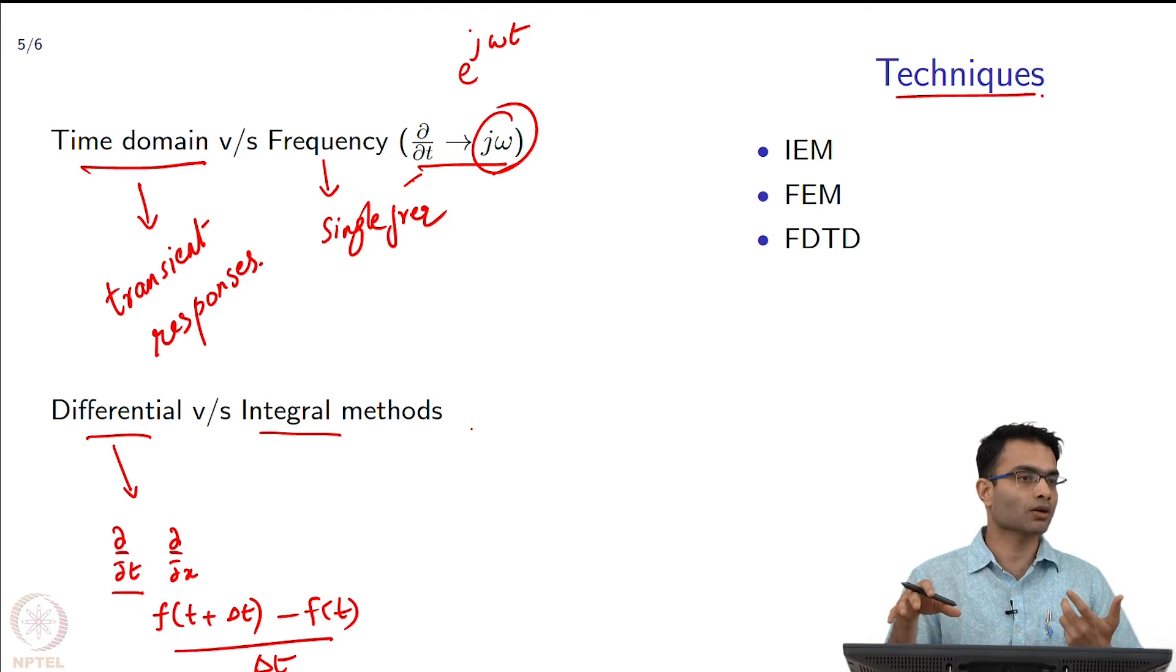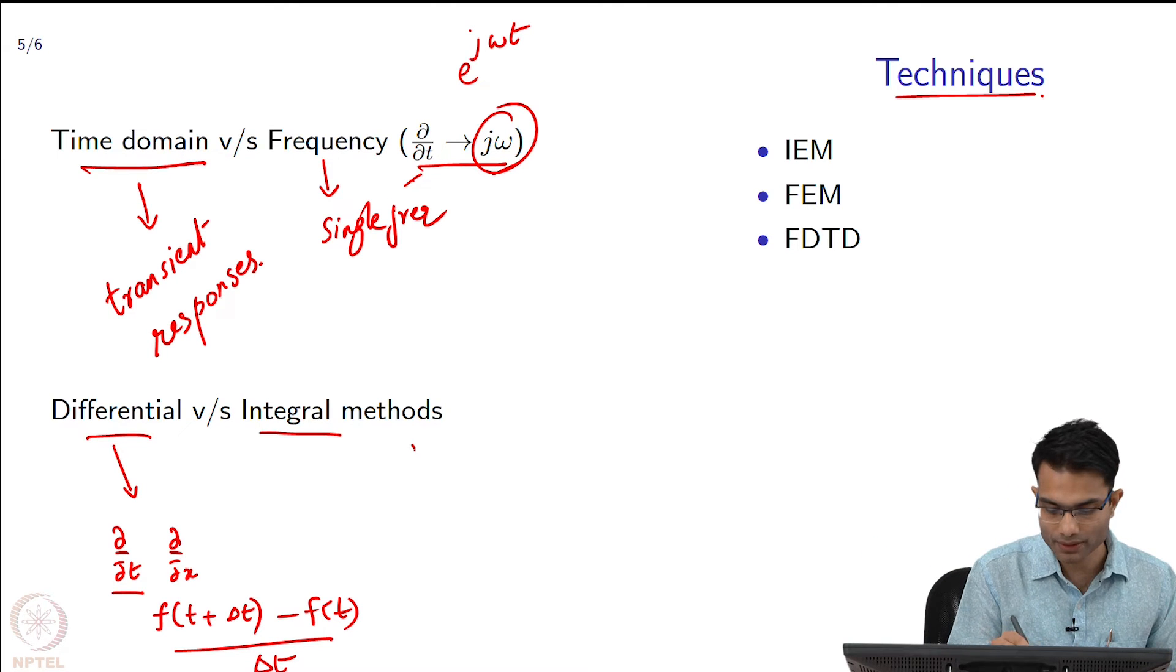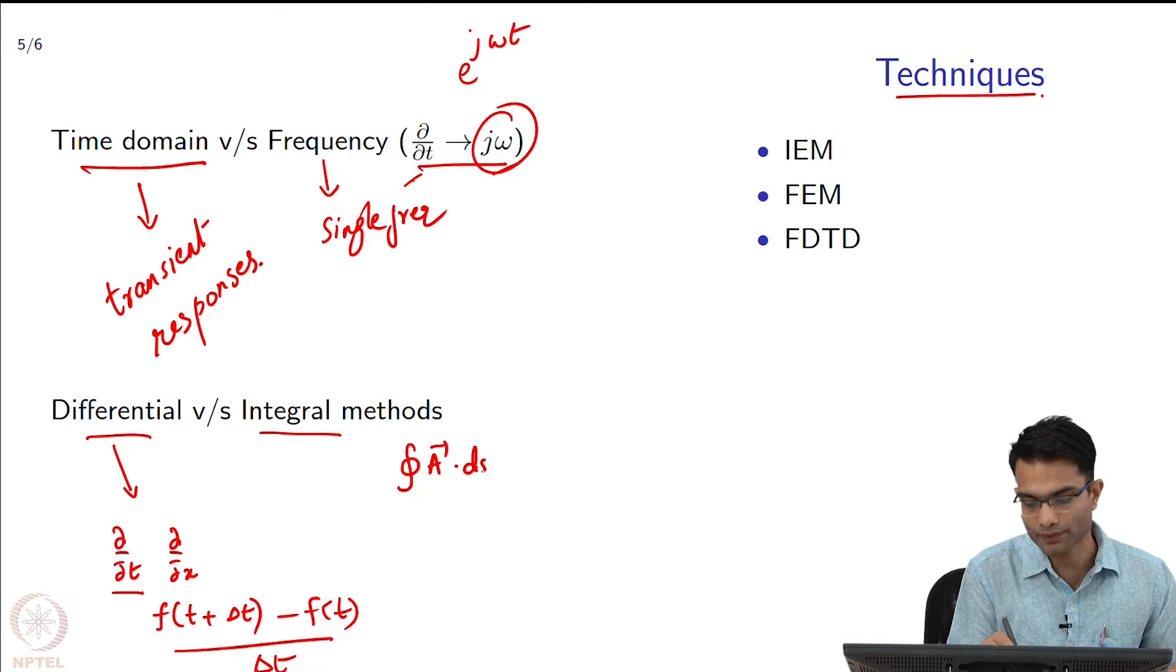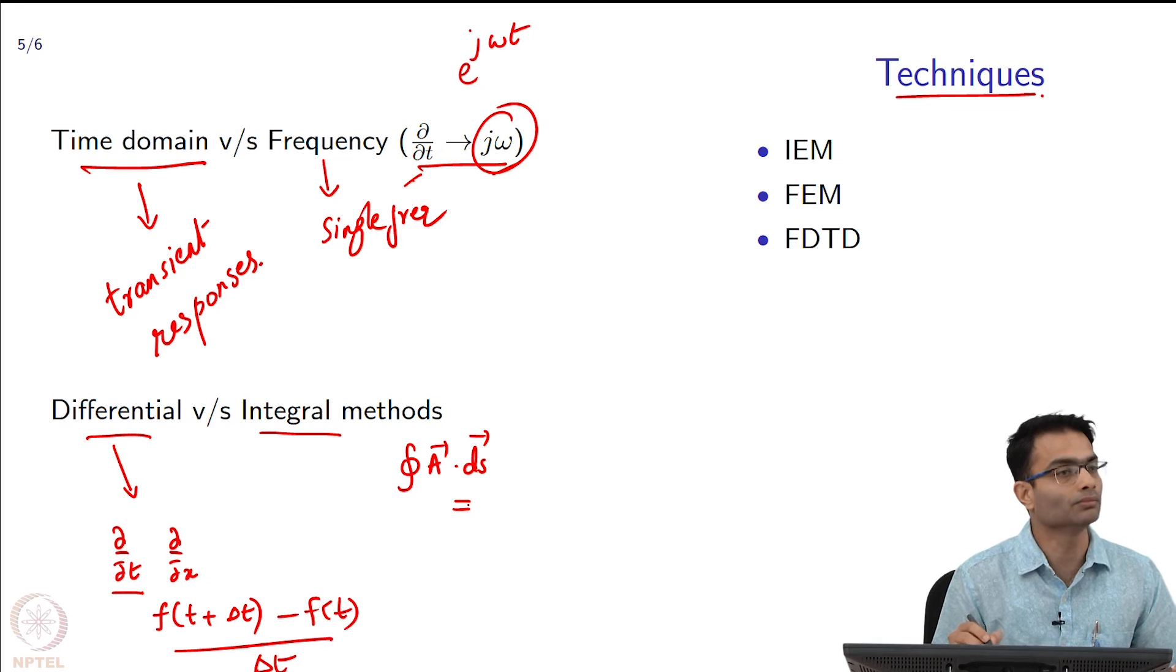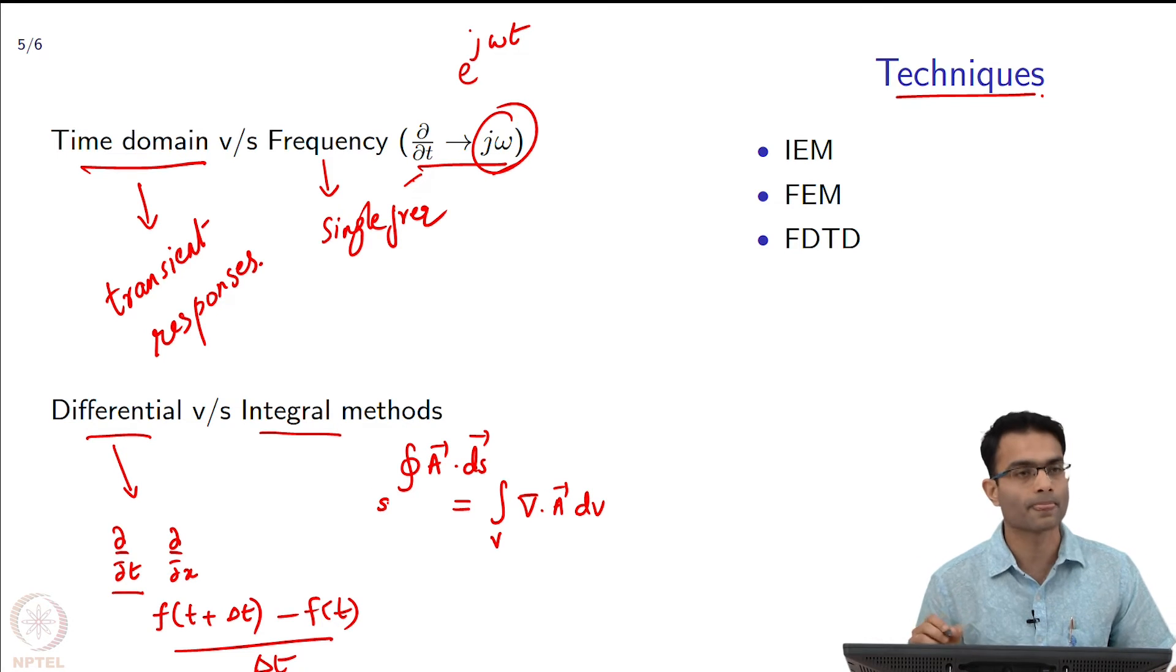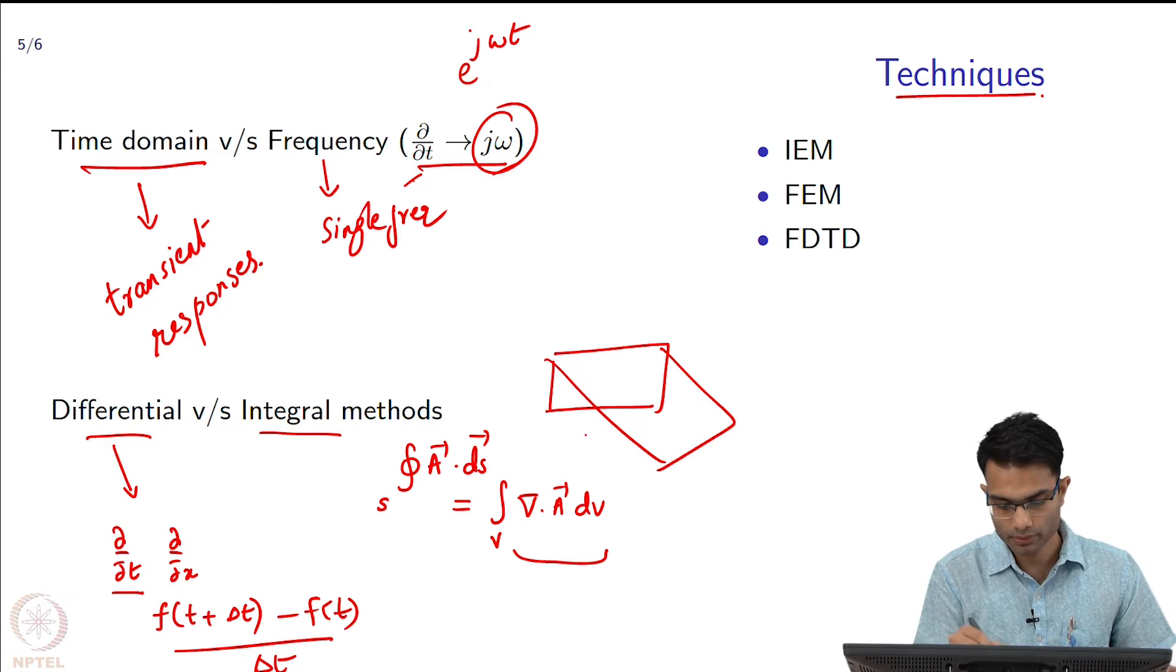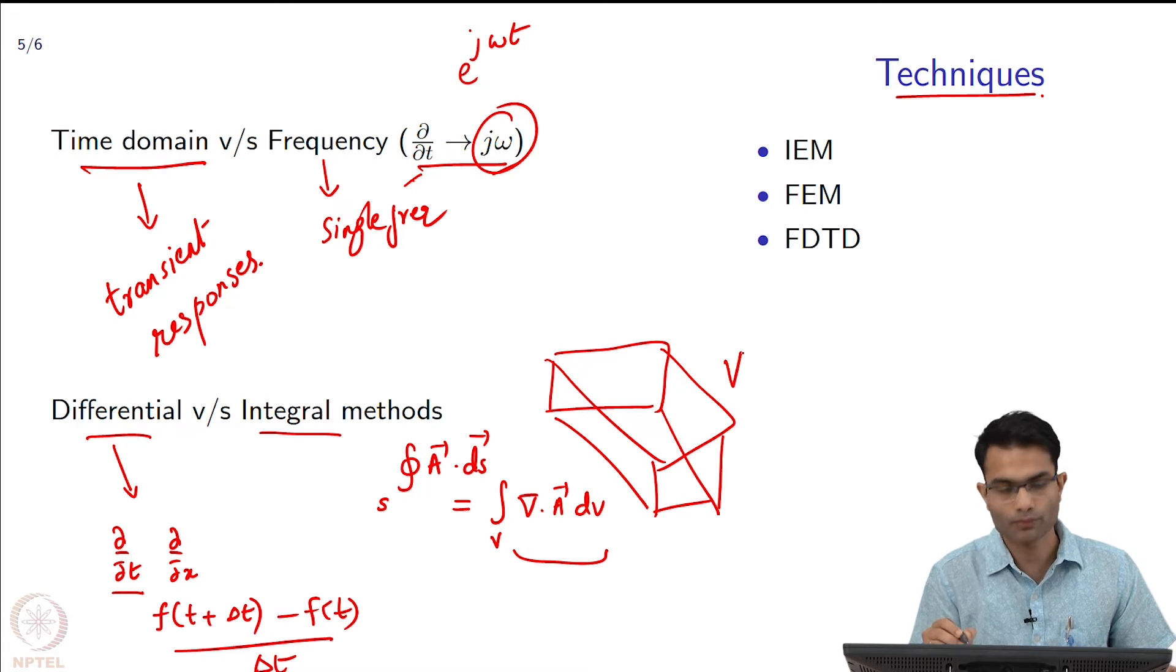On the other hand, integral methods have a very beautiful theory within them which we will study which do not allow the wave to disperse. If I have propagation over long distances, I should switch to integral equation methods. Those of you who saw the review lecture on vector calculus, there were two very important theorems - the divergence theorem and Stokes theorem. Let us just write down divergence theorem. Divergence theorem said that the flux of a vector field is equal to the volume integral of the divergence, over a closed surface.